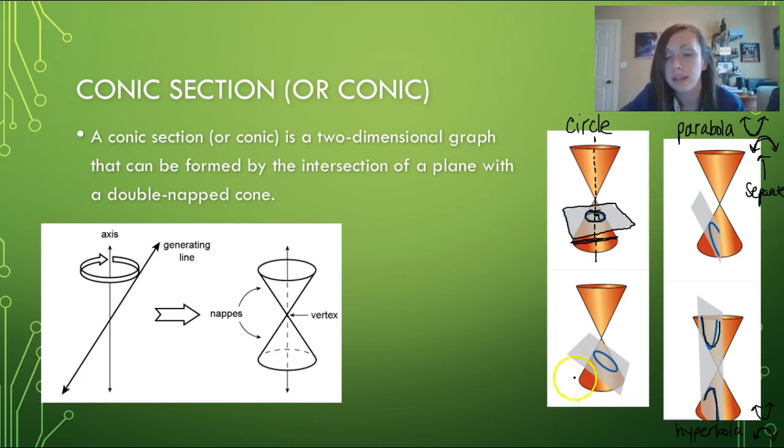The last one is an ellipse. This is when you're not parallel to the base of the cone, you're not perpendicular to the axis, and you're not going through any of the bases, so you're intersecting all the edges of the cone.